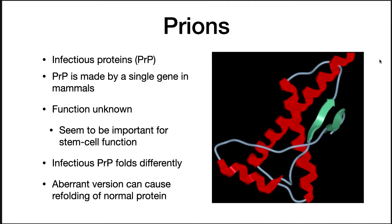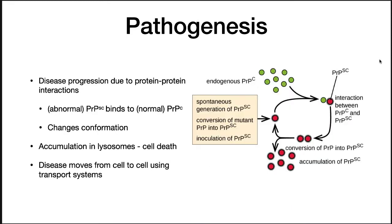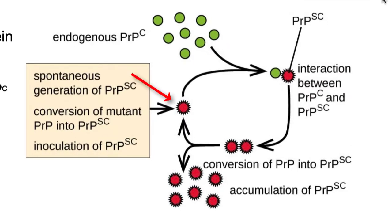The proteins that cause prion disease have the name PRP, and PRP is made by a single gene in mammals. Its function is unknown, but it seems to be important for stem cell function. Infectious PRP folds differently, and this aberrant version then causes problems. The disease progresses because abnormal PRP is able to convert normal PRP to the disease form through protein-protein interactions.